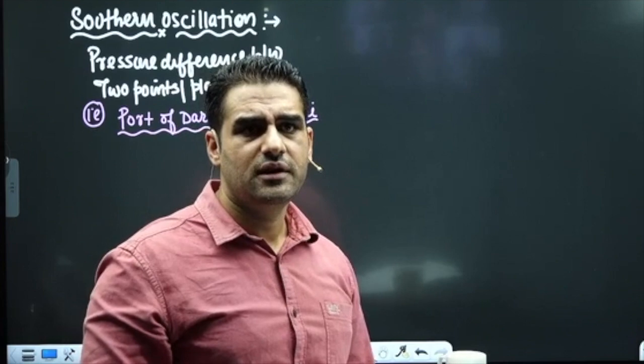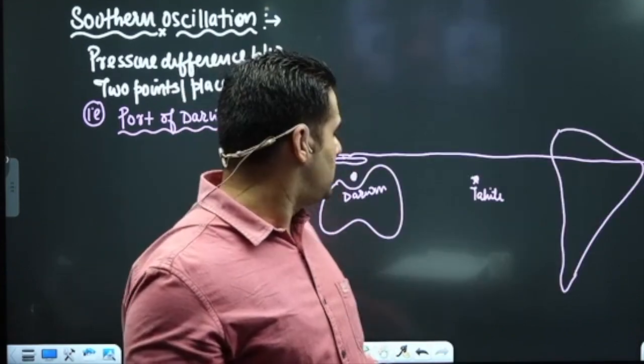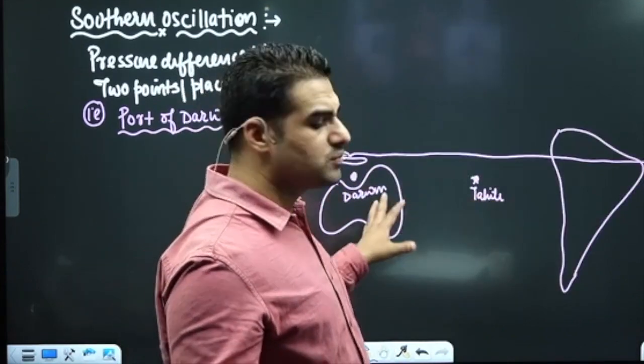Port of Darwin is in Australia and Tahiti is in the Central Pacific. On this world map, these are the two places.